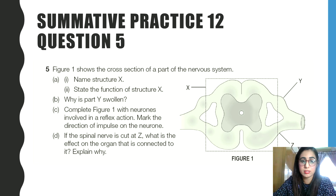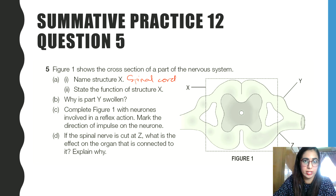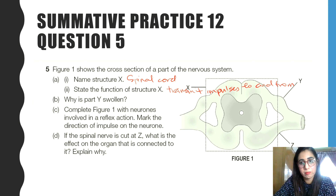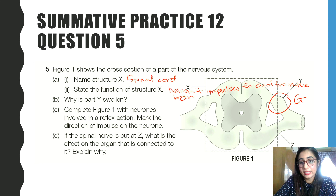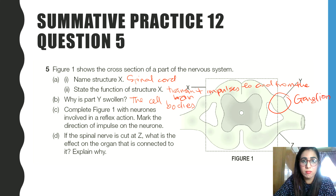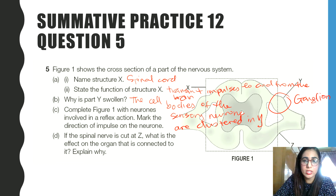Let's look at a question from Summative Practice 12, question 5, related to the spinal cord. In a cross-section of the nervous system, X is the spinal cord. The function of the spinal cord is to transmit impulses to and from the brain. Y is the ganglion — the swollen part on the dorsal root — and it is swollen because the cell bodies of the sensory neurons are clustered there, which is why you have a lump at that location.